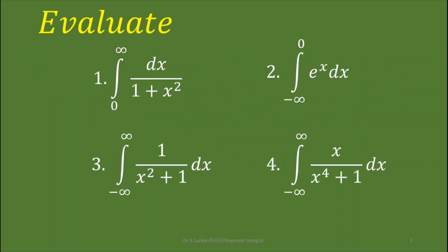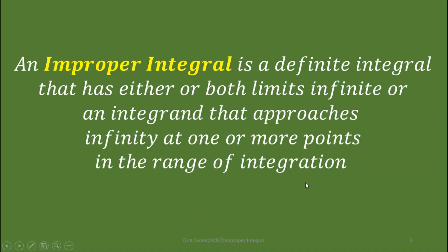There are four questions. If you observe these questions, infinity is present in the limits. In the first question the upper limit is infinity, in the second question the lower limit is minus infinity, in the third and fourth questions both the limits are infinity. This corresponds to the definition: an improper integral is a definite integral that has either or both limits infinite.